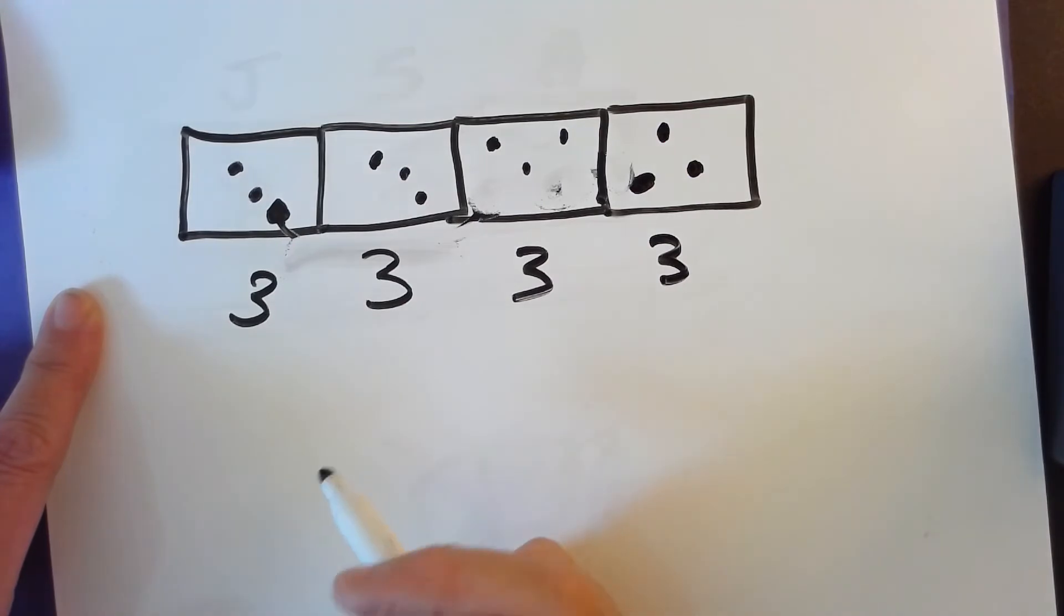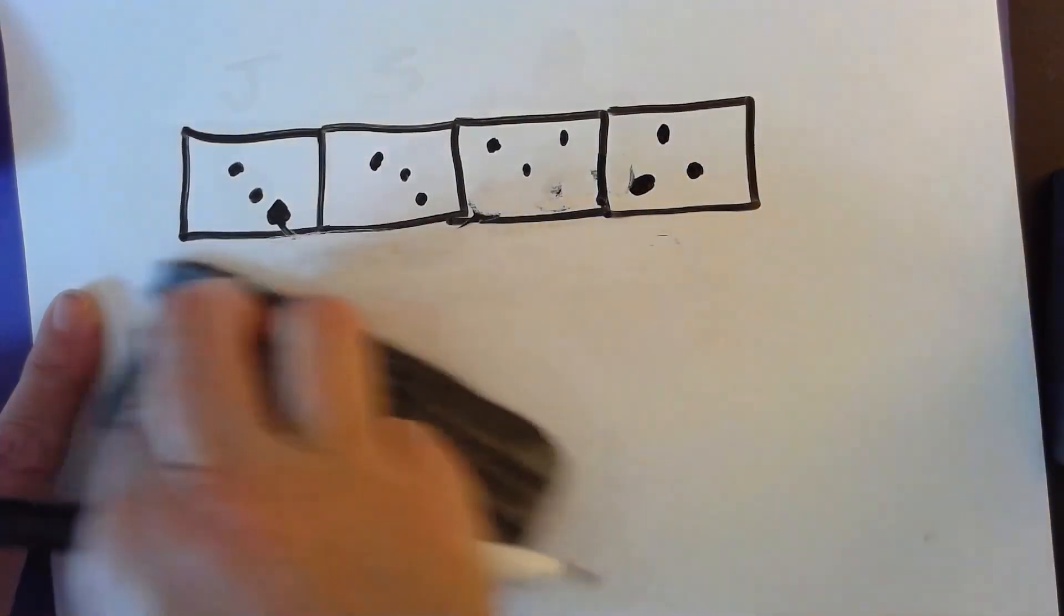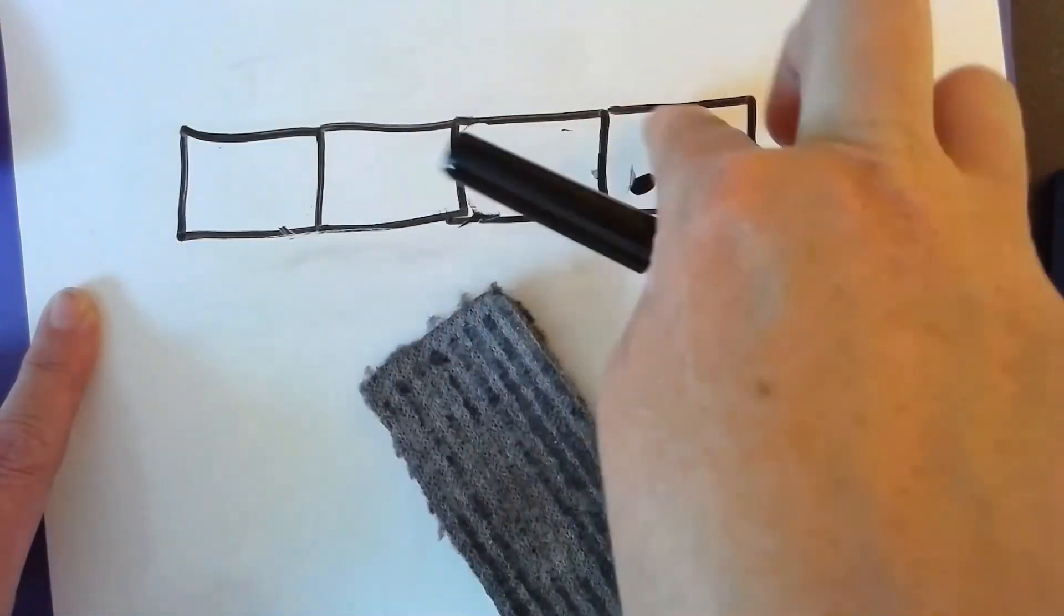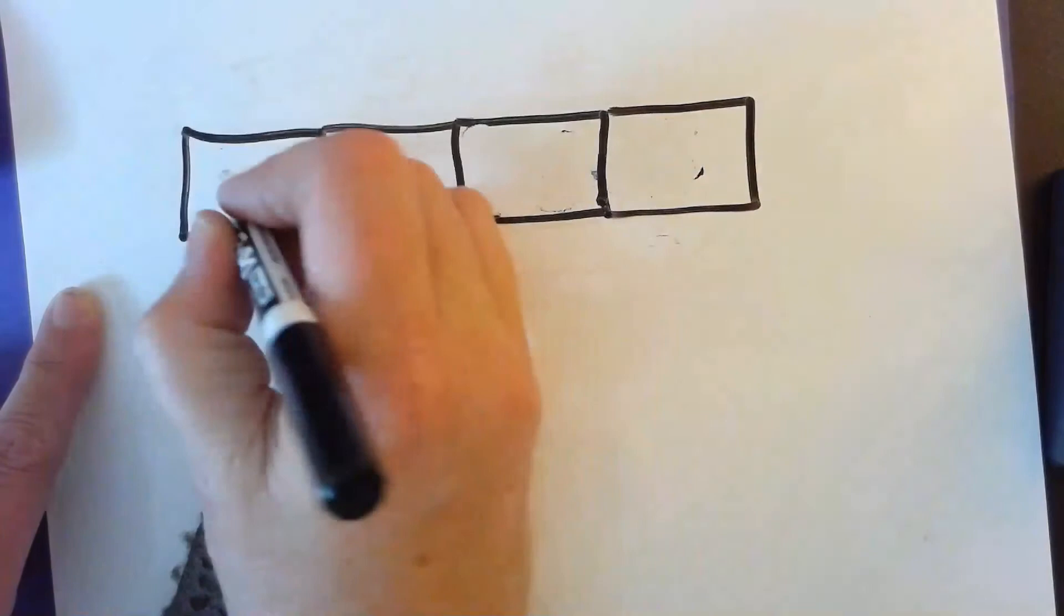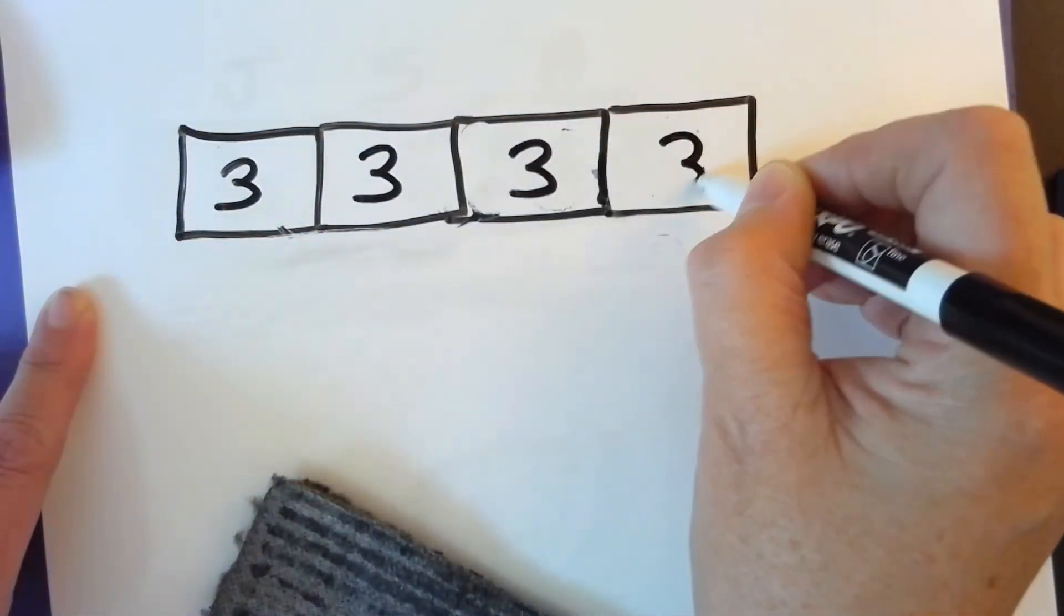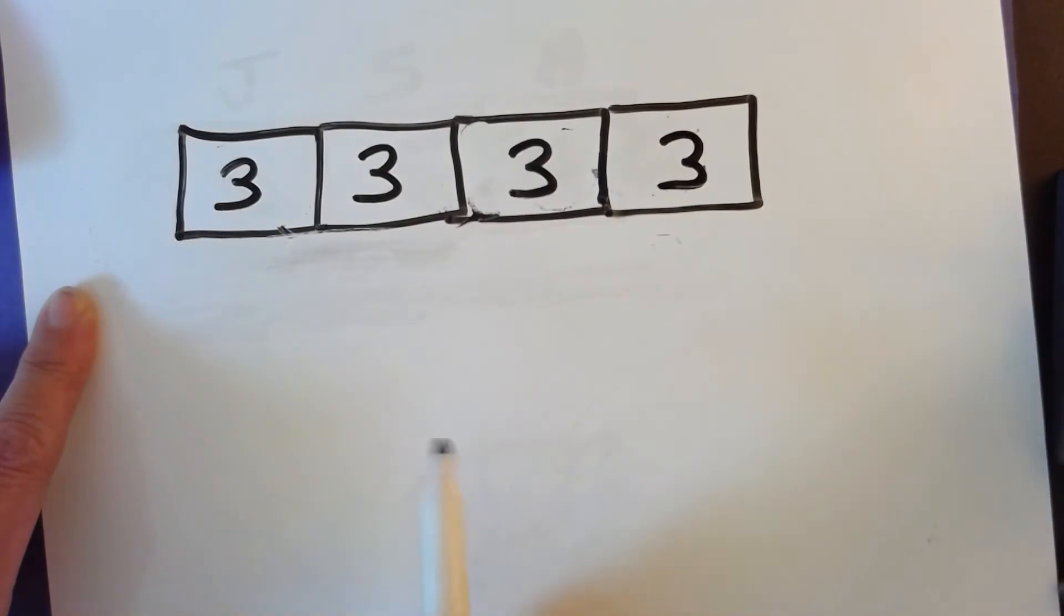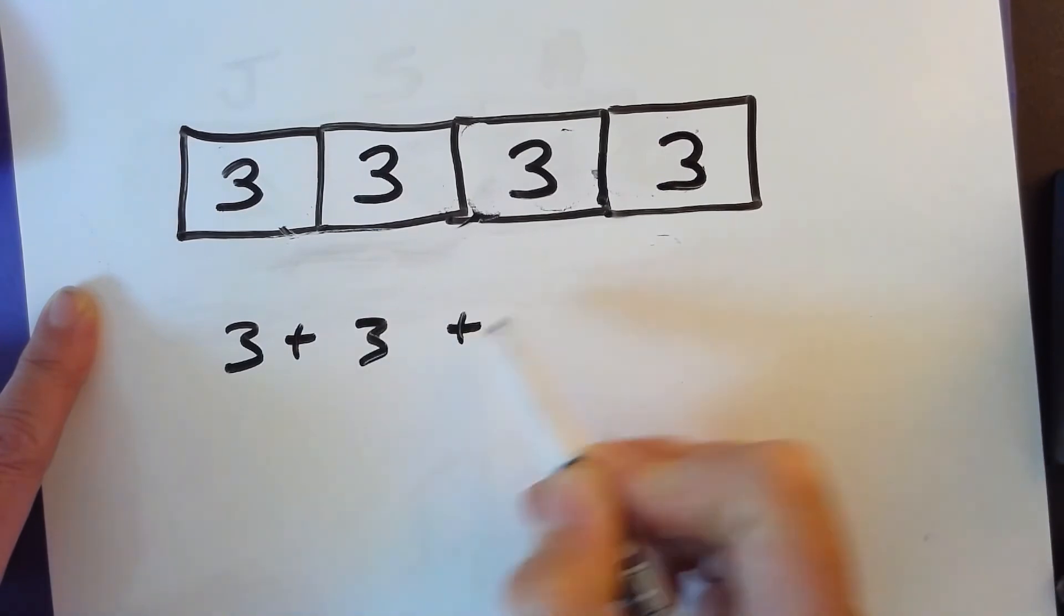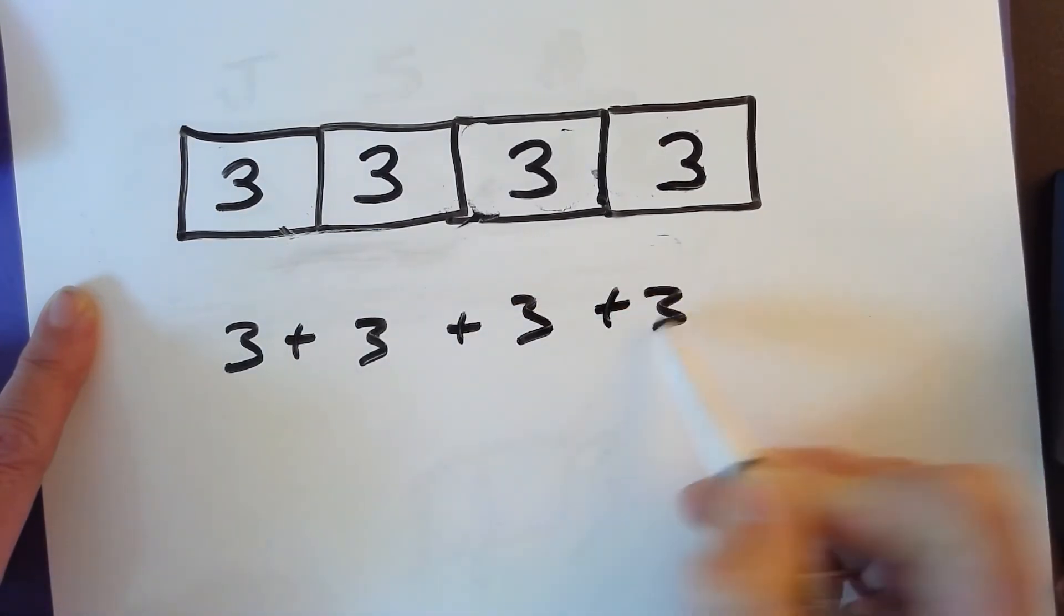So now I want you to remove the dots, and let's put the three inside of the boxes. Three, three, and three. So we have four groups, four equal groups of three. Let's write a repeated addition equation for this. Three plus three plus three plus three.